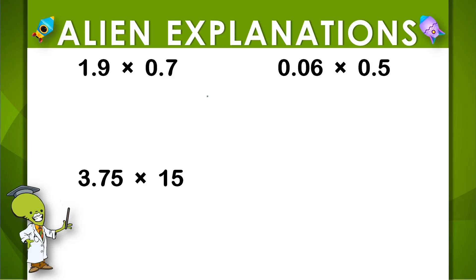Let's use these examples to review how we multiply decimal amounts. In this first one, I have 1.9 times 0.7. We don't do anything different than multiplying whole numbers as far as setting it up goes. We're going to multiply this the same way we would multiply 19 times 7.